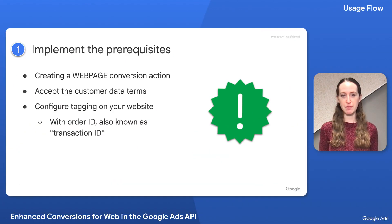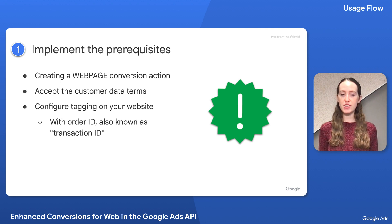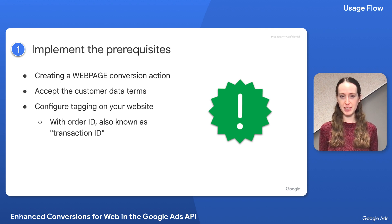First, a reminder to implement the prerequisites before getting started on your implementation. If you watched the introduction video, you already know about the prerequisites, which include creating a web page conversion action, accepting the customer data terms, and configuring tagging with an order ID on your website.